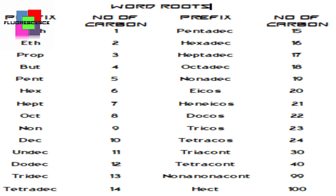Continuing: 23 is 'tricosa', 30 is 'triaconta', followed by the suffix '-ane', so 'triacontane'. 31 is 'hentriaconta', 32 is 'dotriaconta', 40 is 'tetraconta', 50 is 'pentaconta', and 100 is 'hecta'.